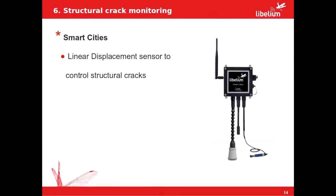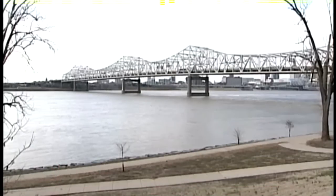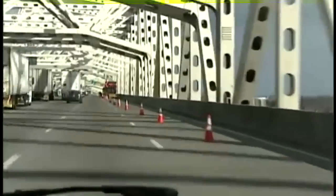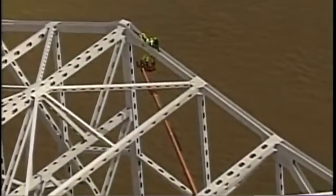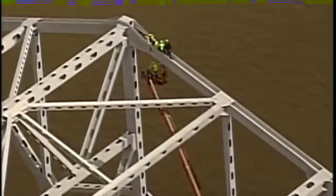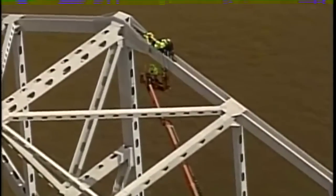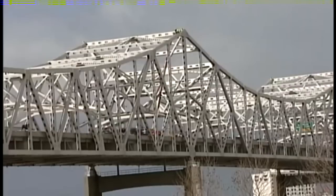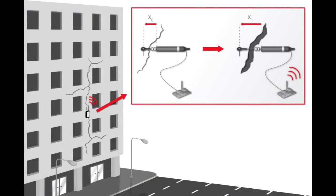A new different application is the structural crack monitoring, such as bridges, tunnels, etc. The smart cities line includes a linear displacement sensor to control these structural cracks. This sensor and others like vibration sensors would permit the monitoring of all structures, although it could also be useful for the monitoring of the building process of new structures.